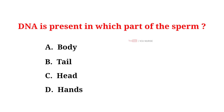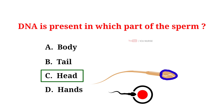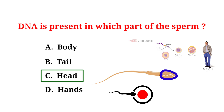DNA is present in the head of the sperm, like a helmet containing genetic information. It's tightly packed, ensuring compact storage. The head's streamlined shape helps it penetrate the egg's protective barrier. The sperm's tail acts like a motor, propelling it towards the egg. Once inside the egg, the sperm's DNA combines with the egg's DNA, creating a unique genetic blueprint for the future individual. This process is essential for human reproduction.